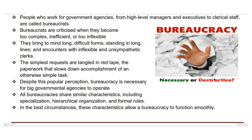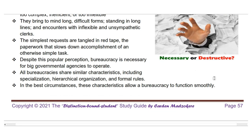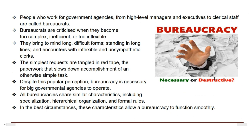All bureaucracies share similar characteristics, including specialization, hierarchical organization, and formal rules. In the best circumstances, these characteristics allow a bureaucracy to function smoothly. Here are a few examples of bureaucracy contributing to public sector failure: delays in decision-making — bureaucratic structures can lead to slow and cumbersome decision-making processes, resulting in delays in implementing policies and addressing urgent issues; red tape and regulations — excessive bureaucratic rules can create barriers for businesses and individuals, hindering economic activities and innovation; and inefficiency and waste — bureaucratic inefficiencies may result in misallocation of resources and unnecessary expenditures, leading to financial waste.